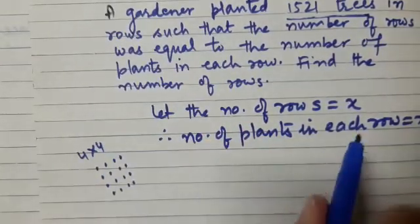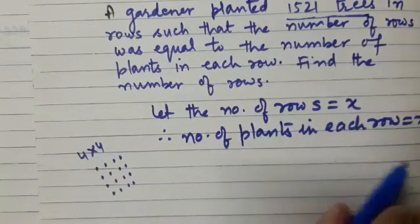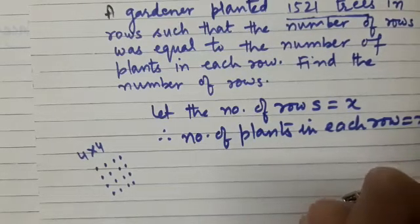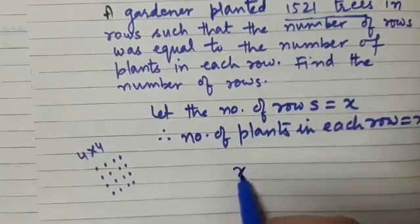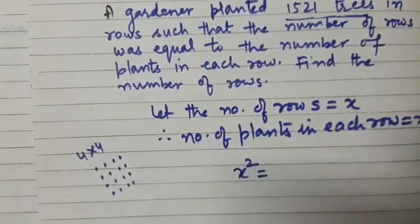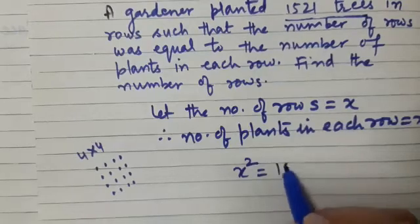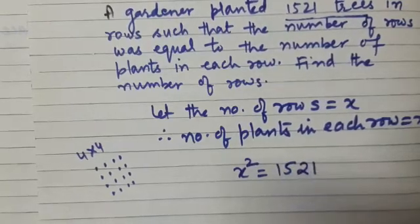The same way, if there are x rows and in each row there are x plants, the total number of plants will be x squared, and it is given to be 1521.